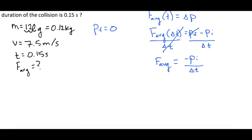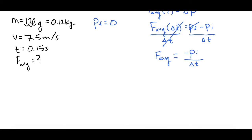So now we just have to plug everything in. So we have the average force is equal to negative 0.12 kilograms times the velocity, which we said was 7.5 meters per second, and then we're going to divide all of that by 0.15 seconds.